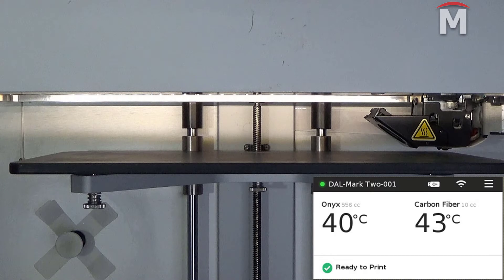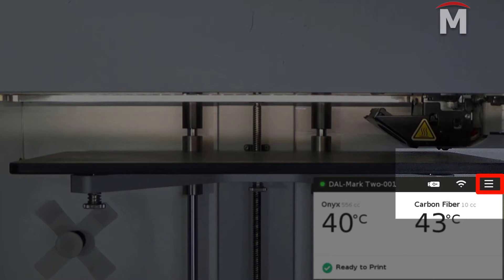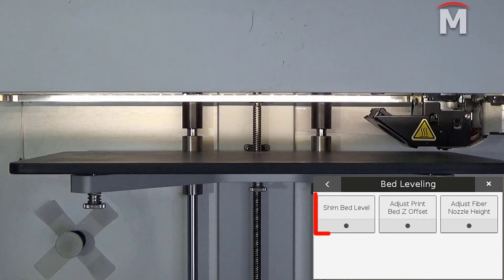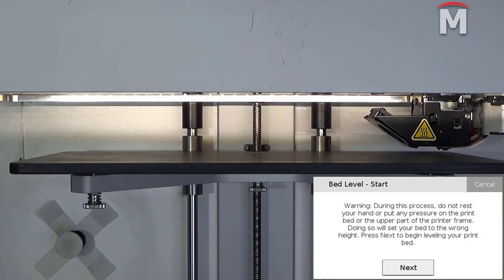To begin our leveling process, we will navigate to the shim bed level utility. Select menu, bed level, shim bed level. Be sure to heed the warning about putting pressure on the print bed during the leveling process and then press next.